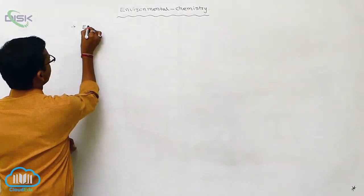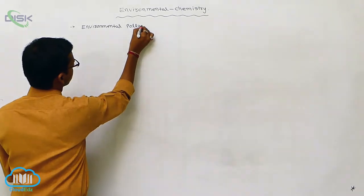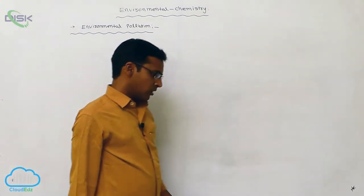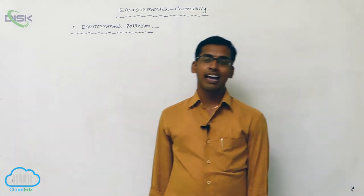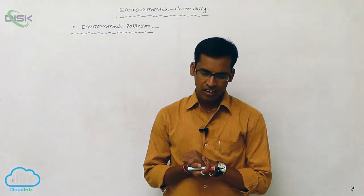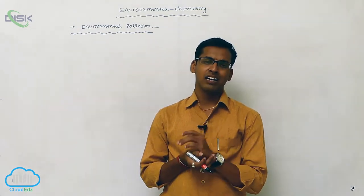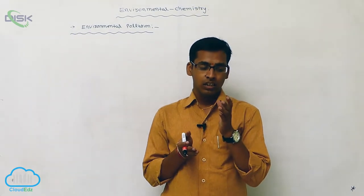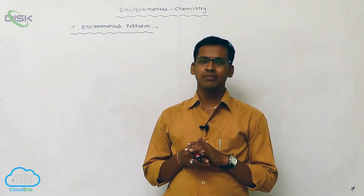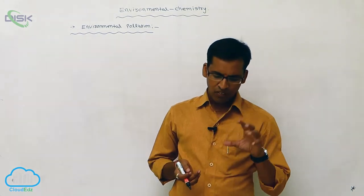In Environmental Chemistry we discuss environmental pollution. The environment is polluted due to solid, liquid, or gaseous particles, and due to the presence of these particles the environment undergoes damage. Some organic compounds like dichloromethane, plastics, or plastic covers are not degraded by any method, and due to that they mainly affect living organisms, causing many diseases and damaging the environment.